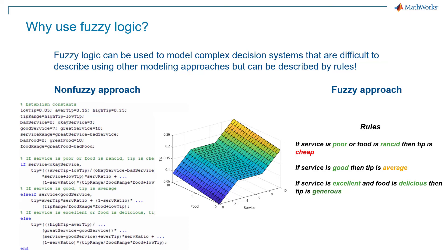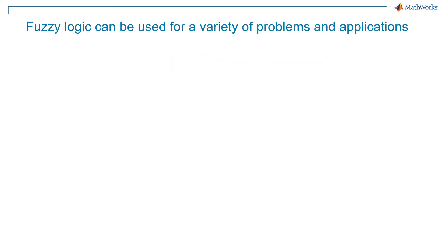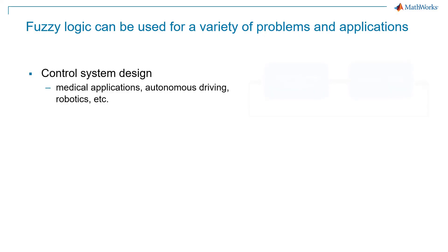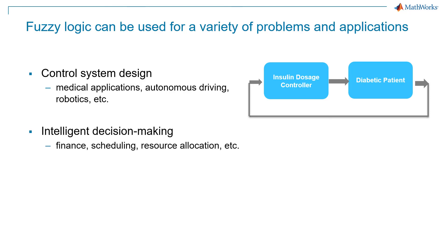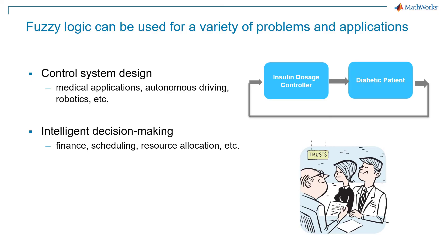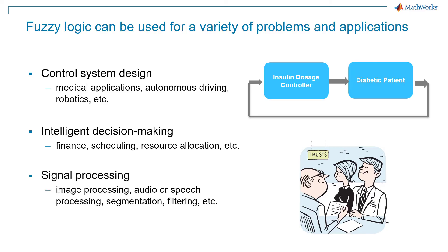Fuzzy logic makes it easier to create complex systems for which you might not know much about the underlying mathematical equations or dynamics, but you have expert knowledge which you can encode in the form of logical rules. Fuzzy logic can be used for a variety of problems and applications: control design applications across medical applications, autonomous driving, robotics, and more. It can also be used for intelligent decision making systems for finance-related applications, scheduling, and resource allocation. Similarly, fuzzy logic can be applied for signal processing applications such as image processing, speech processing, and image segmentation.